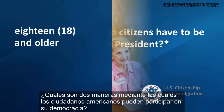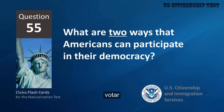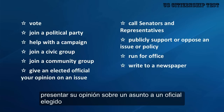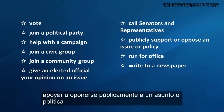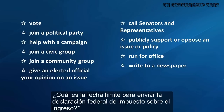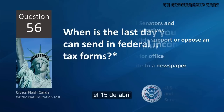How old do citizens have to be to vote for president? Eighteen and older. What are two ways that Americans can participate in their democracy? Vote, join a political party, help with a campaign, join a civic group, join a community group, give an elected official your opinion on an issue, call senators and representatives, publicly support or oppose an issue or policy, run for office, write to a newspaper.